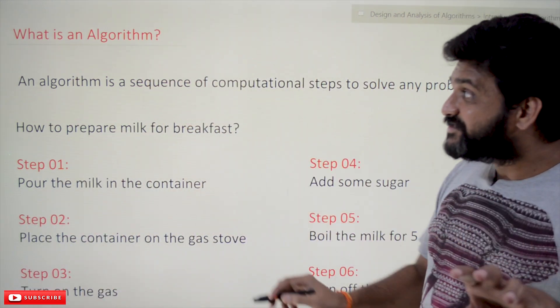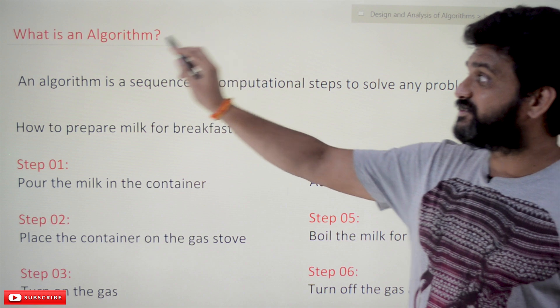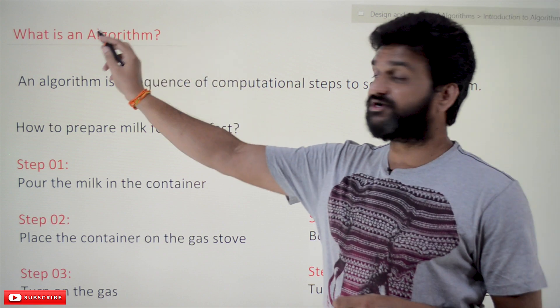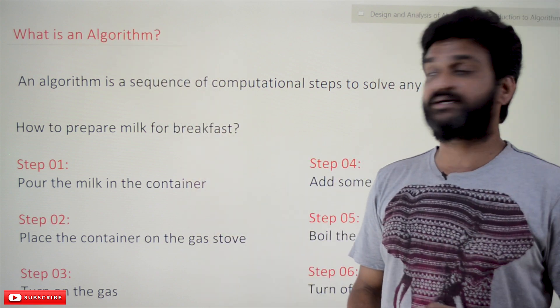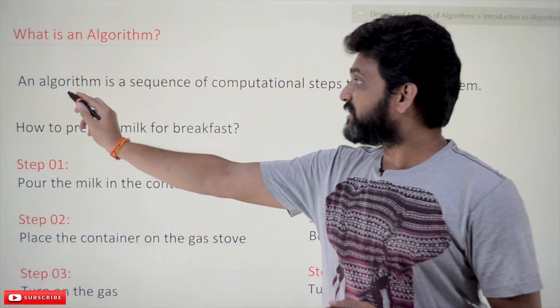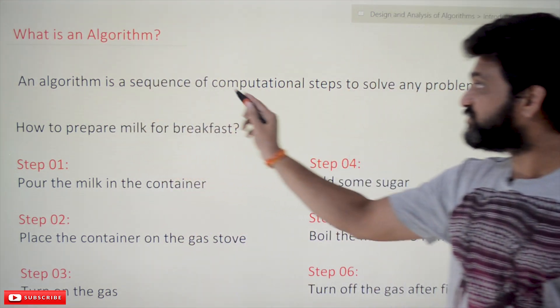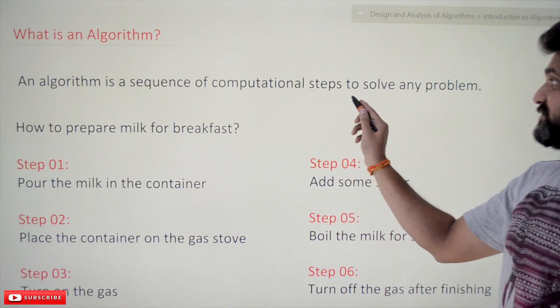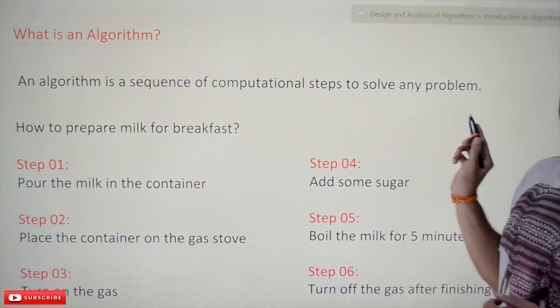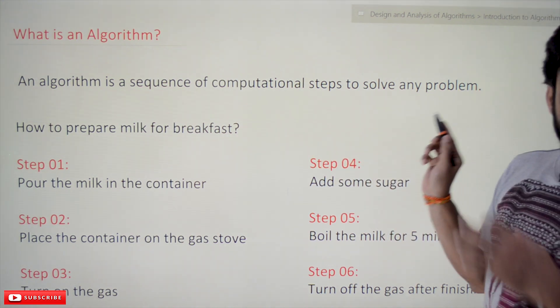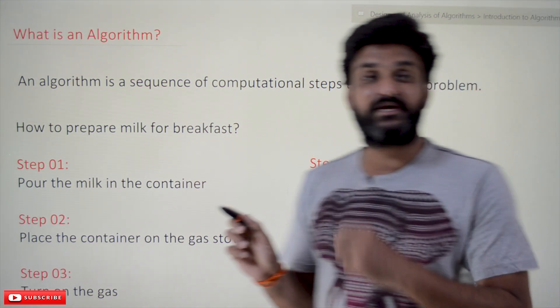We'll start our course with the simple definition: what is an algorithm? An algorithm is a sequence of computational steps to solve any problem. This definition alone may not fully clarify the concept, so we'll take an analogy from our day-to-day life for a better understanding.